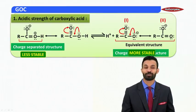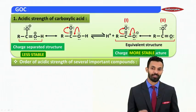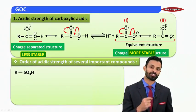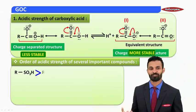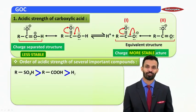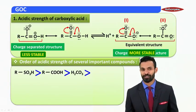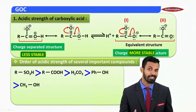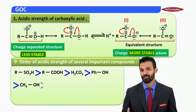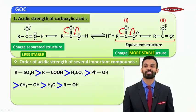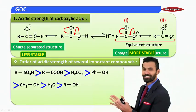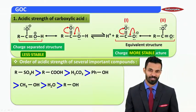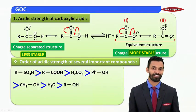Now we will see a simple but important sequence of acidic strength. Sulfonic acid is the strongest among all because its resonating structures are most stable. After sulfonic acid comes carboxylic acid, then carbonic acid, then phenol. After phenol, methanol is next — notably, methanol is the only exceptional alcohol more acidic than water; all other alcohols are weaker acids than water.